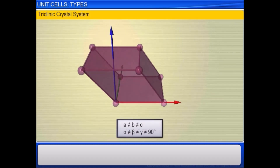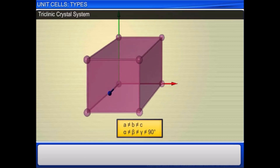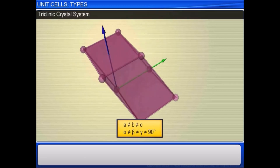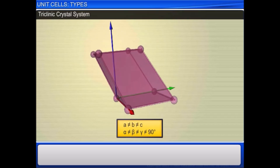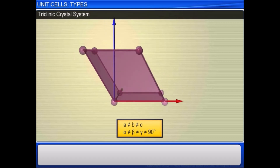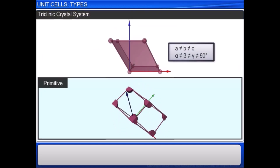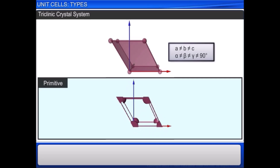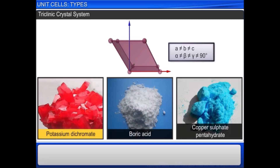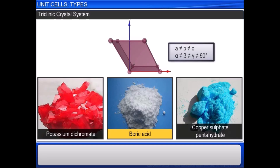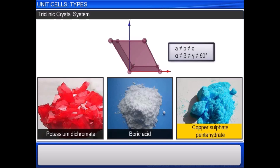In a triclinic crystal system, the three axes are of unequal length, all angles are different, and none is equal to 90 degrees. The only possible lattice is primitive. Examples include potassium dichromate, boric acid, and copper sulfate pentahydrate.